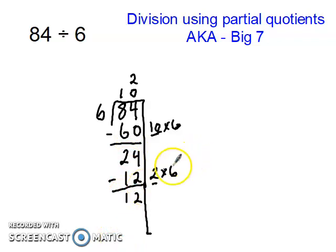That works out well because I can use 2 times 6 one more time. 2 times 6 equals 12. So I'm going to move this 2 up here, and then I'll subtract. That's going to give me 0. So I am finished dividing.